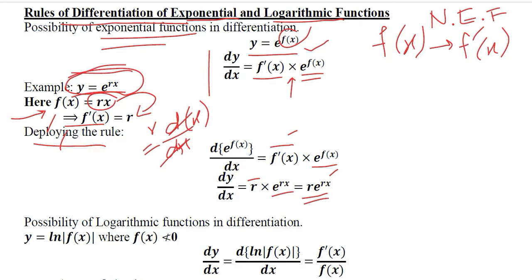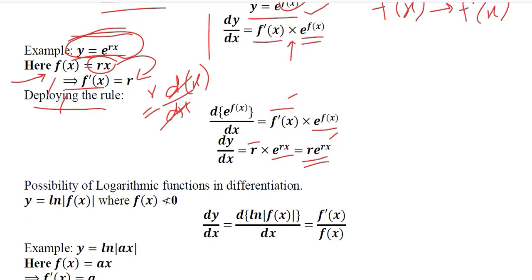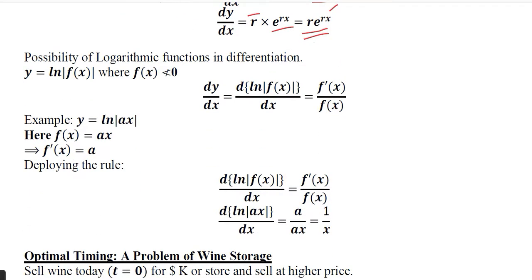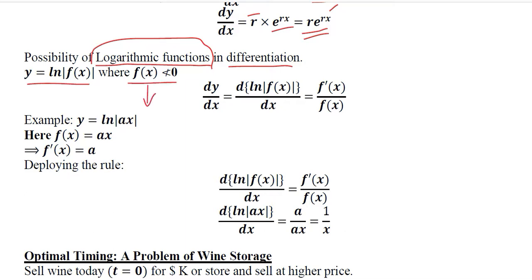In addition to natural exponential functions, we have natural logarithmic functions as well. We should also learn how to differentiate them. For instance, if we have a function which is the natural log of f(x), a stipulation is that f(x) should not be less than zero — meaning we take the log of a positive value, which is something meaningful.